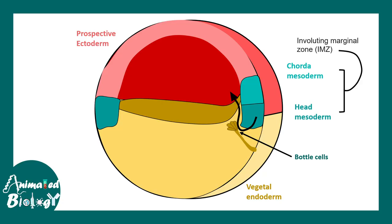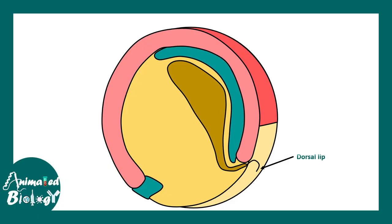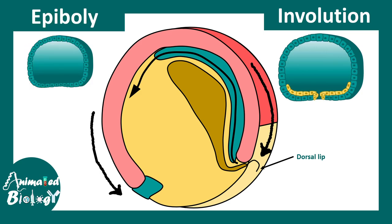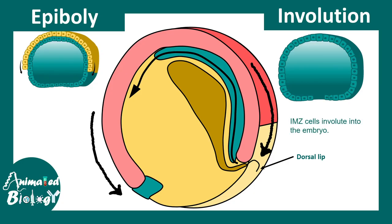Following the movement of the blue cells: while these blue cells are moving beneath the red cells, the red cells are undergoing the process of epiboly. Epiboly is a movement by which the entire embryo becomes surrounded by ectodermal cells. Two simultaneous movements are going on. The dorsal lip is visible here, and the inner arrow shows the direction of involution of the mesoderm or IMZ tissue, while the outer arrow shows the direction of epiboly. So involution and epiboly are two important movements occurring during frog gastrulation.